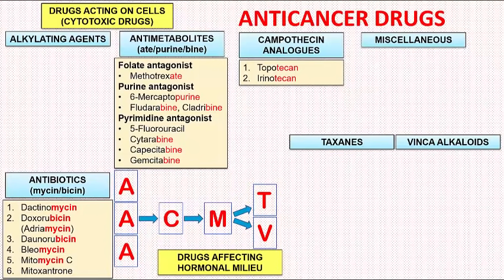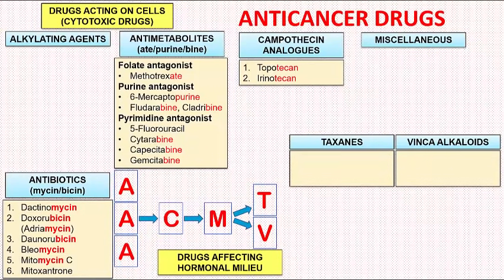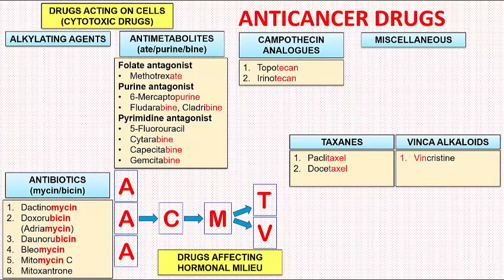Next we will talk of two groups together: the taxanes and the vinca alkaloids. Both of these drugs have a similar mechanism of action, i.e. both are microtubule inhibitors. In taxanes, we have paclitaxel and docetaxel — taxanes and -taxel sound similar, easy to remember. In vinca alkaloids, we have vincristine, vinblastine, and vinorelbine. All the drugs start with the letters V-I-N and the class of drugs also starts with V-I-N, vinca alkaloids — easy to remember.